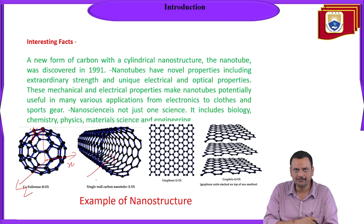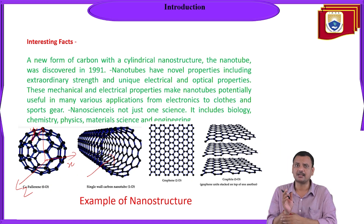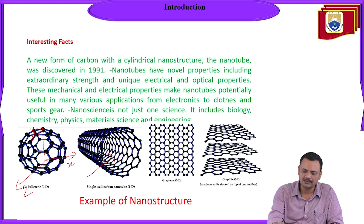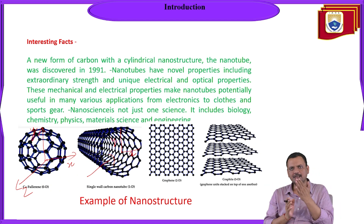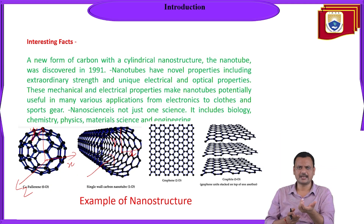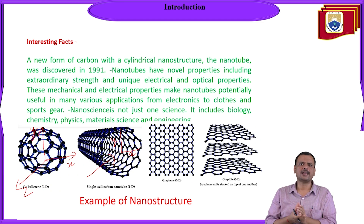This is a single-wall nanotube — a one-dimensional nanomaterial. Why? Because it can grow in a single direction, say z, but the other two directions, x and y, are confined in the nano region. A single-wall carbon nanotube — there are also multi-wall carbon nanotubes — can grow along z, but x and y are confined. So this is a one-dimensional nano object.